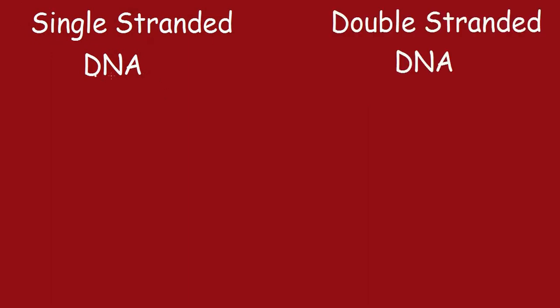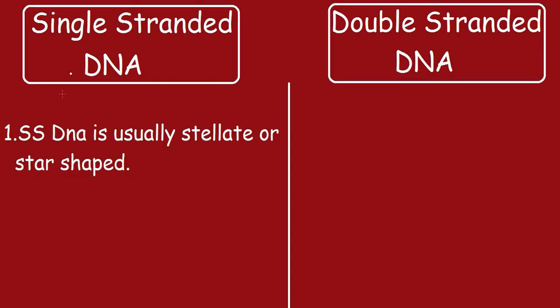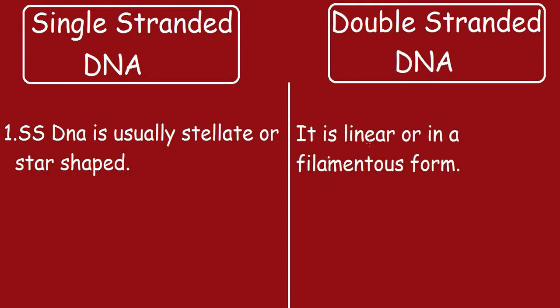Let's study the differences between single-stranded DNA and double-stranded DNA. The first point: single-stranded DNA (ssDNA) is usually stilet or star-shaped. Double-stranded DNA is linear or in a filamentous form.